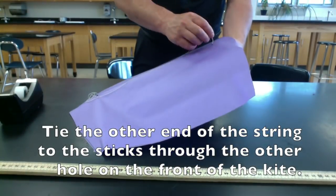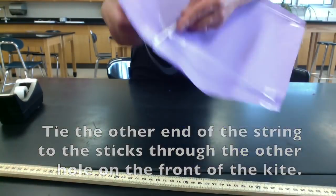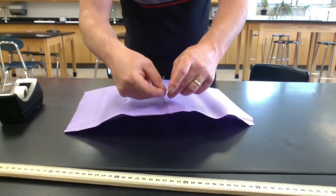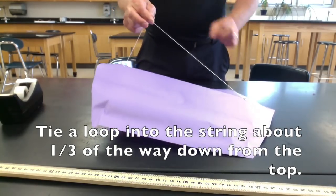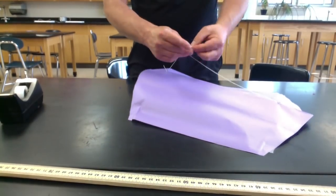Tie the other end of the string to the sticks through the other hole on the front of the kite. Then, tie a loop into the string about one-third of the way down from the top.